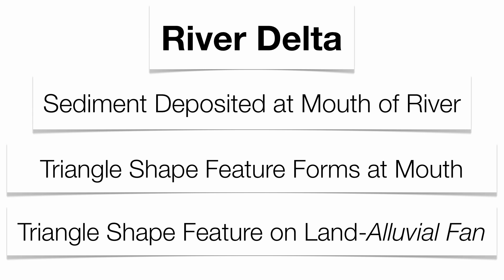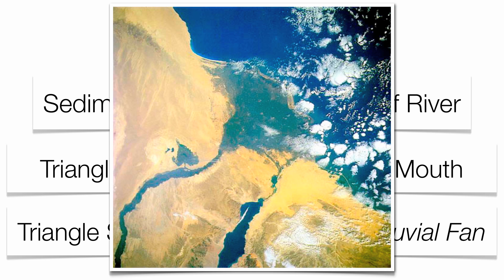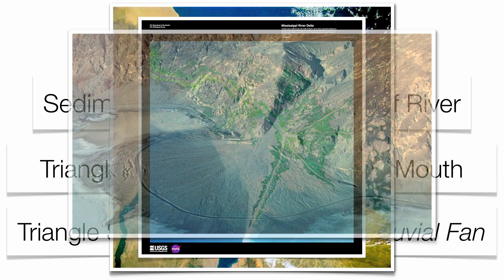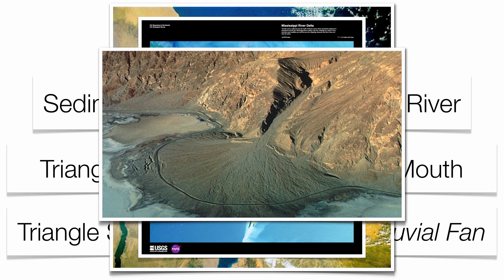Sometimes you get these triangle-shaped features on land — those are what we call alluvial fans. There's the Nile River delta, there's the Mississippi delta, and then finally an alluvial fan as examples.